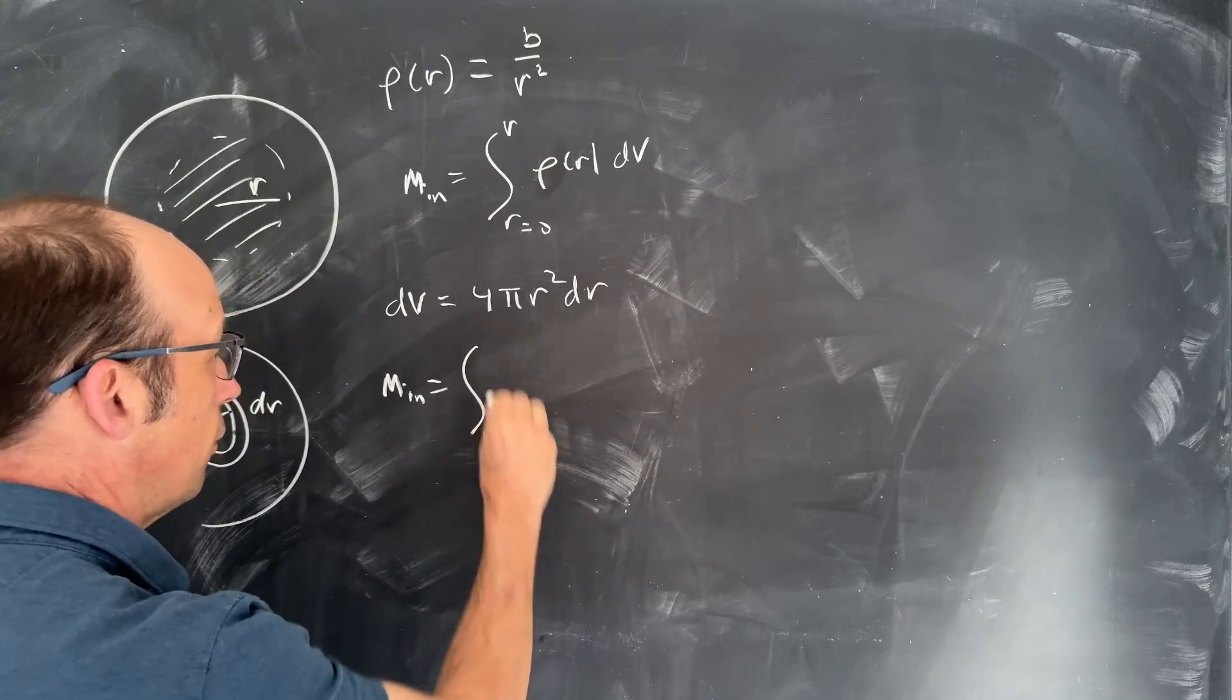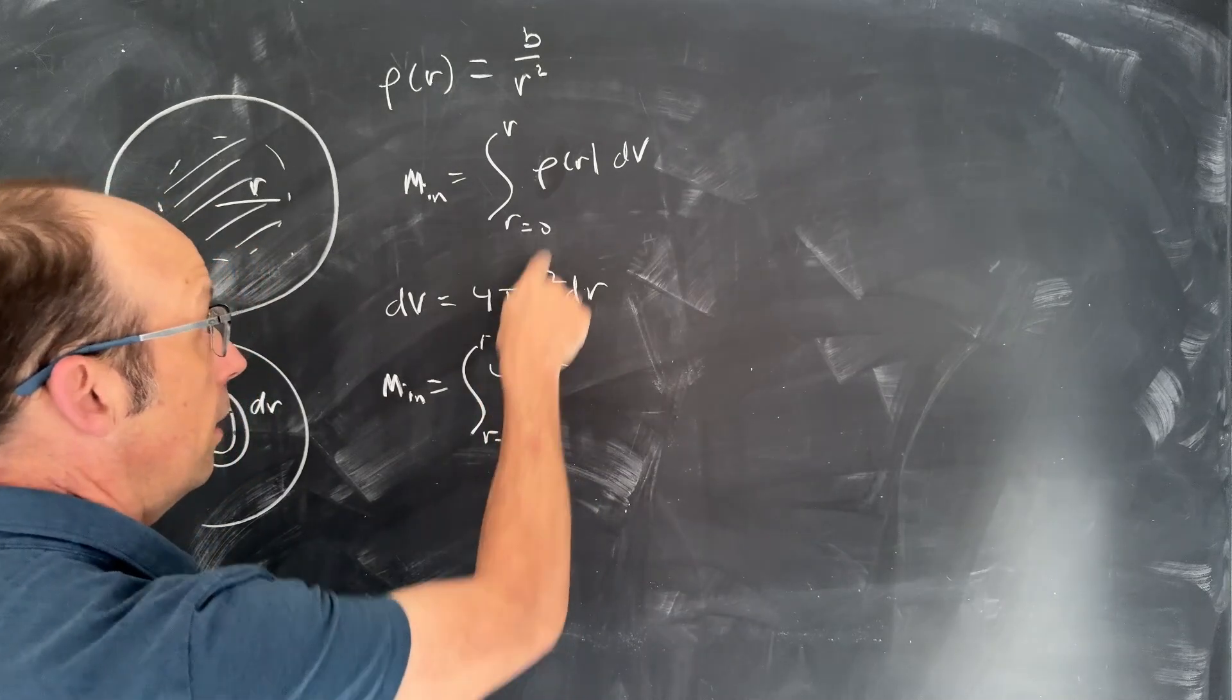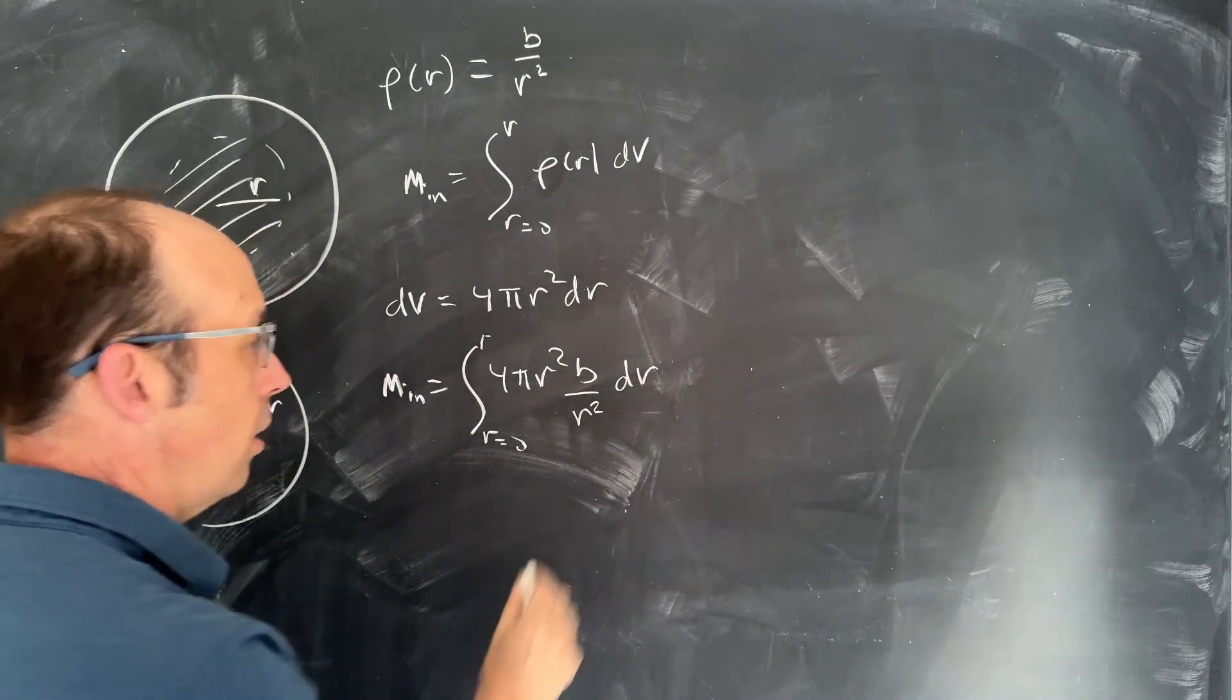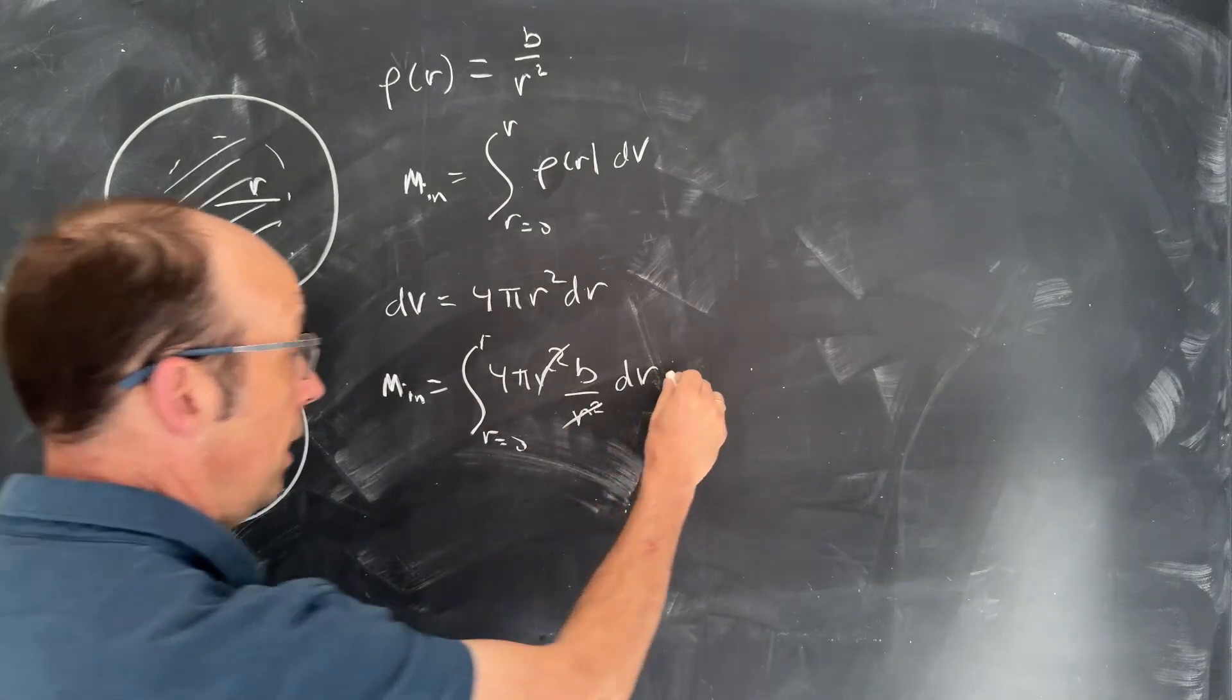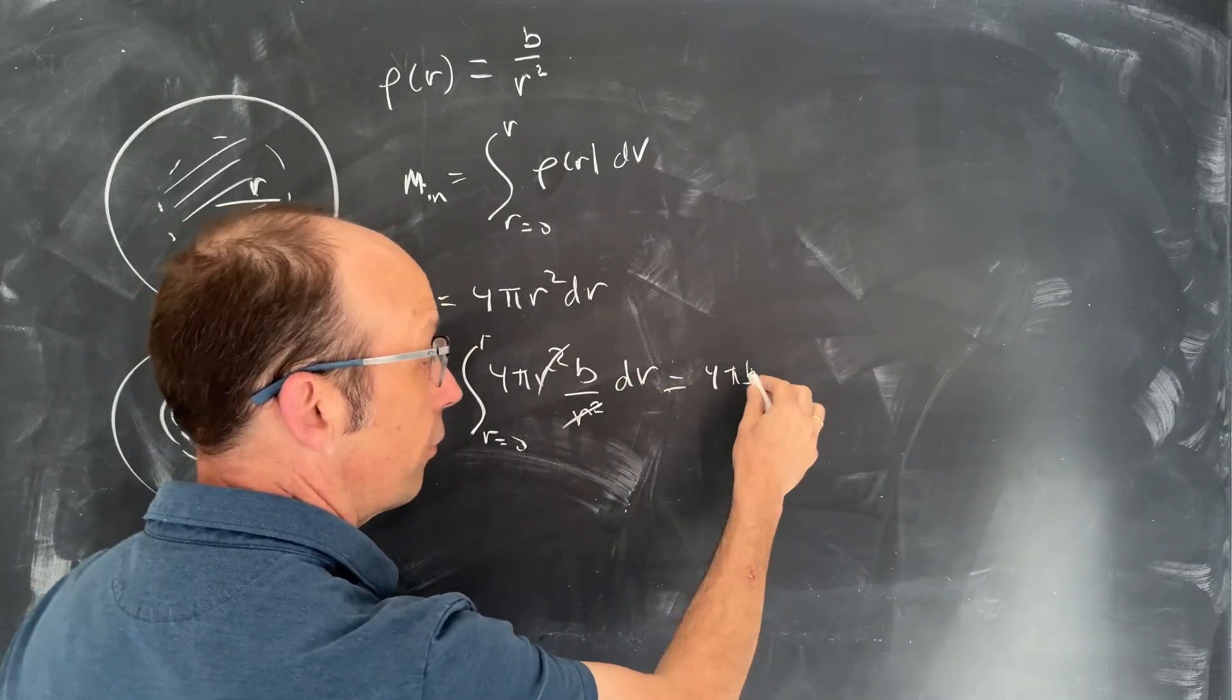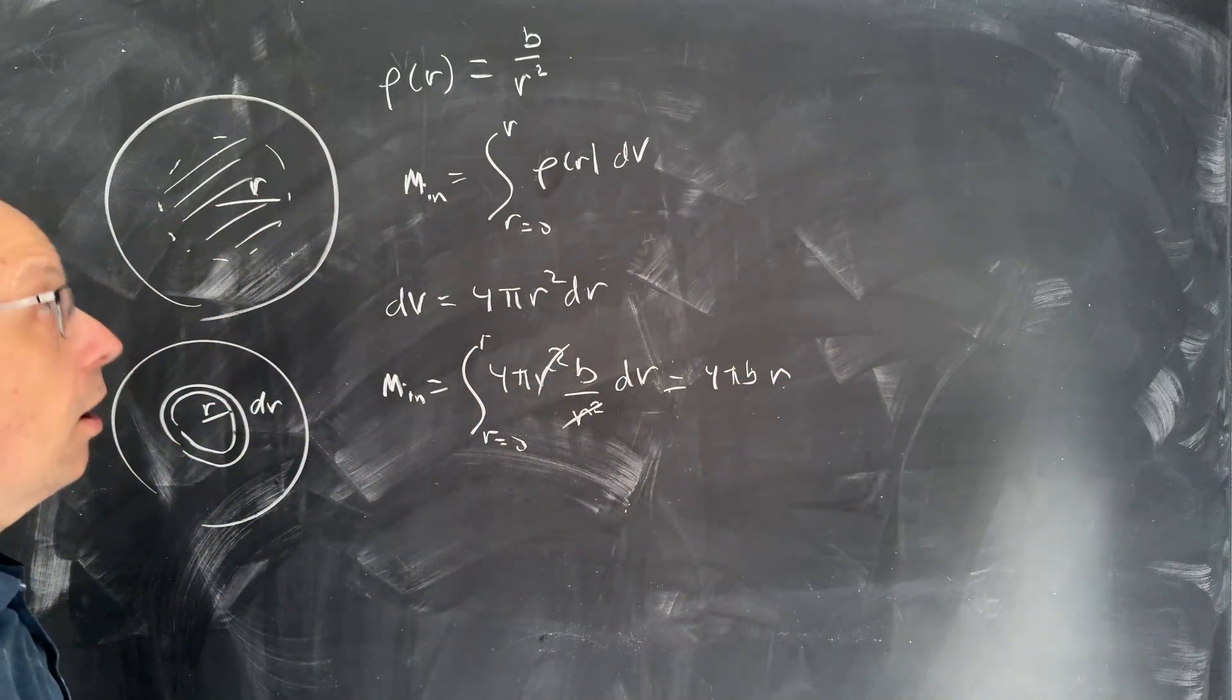So m_in is going to be the integral from r equals 0 to r. Again, you shouldn't do that. 4π r² times the density b over r² dr. And so you see those cancel. So I still have to integrate, though, and I get the integral of dr. So I'm going to get 4π b. The integral of dr is going to be r. Evaluated from 0 to r is just r. So that's my mass_in. It's 4π b r.